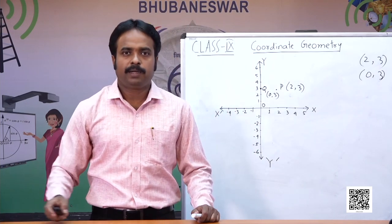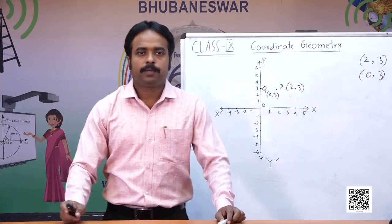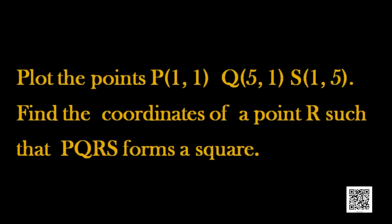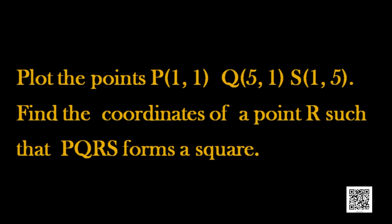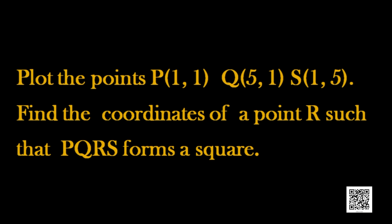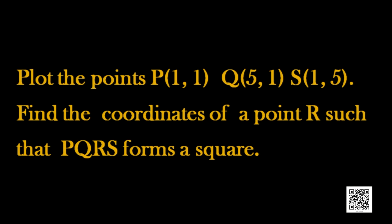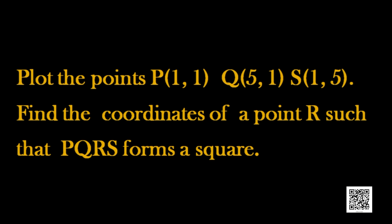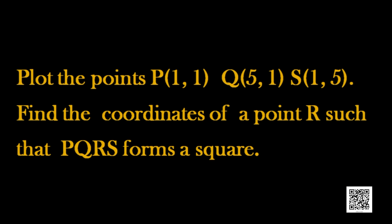Now let us start a problem: plot the points P(1,1), Q(5,1), and S(1,5). Find the coordinates of a point R such that P, Q, R, S forms a square. So we want to plot the points P, Q, and S first, then find a particular point R such that PQRS will form a square.